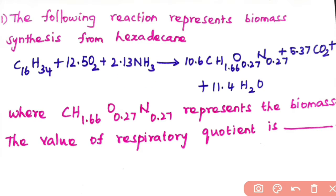gives 10.6 CH1.66O0.27N0.27, where CH1.66O0.27N0.27 represents the biomass. This is your product, and also it releases 5.37 CO2 and 11.4 H2O. They are asking to calculate the value of respiratory quotient.